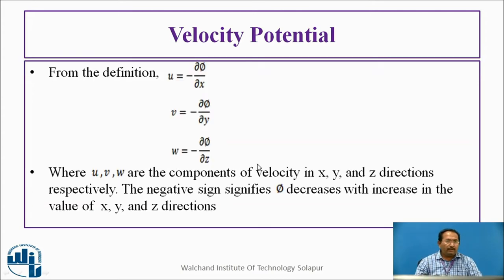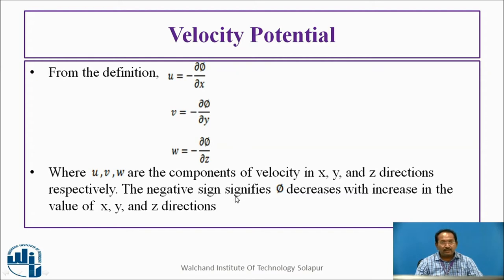From the definition, u equals negative partial derivative of phi with respect to x, v equals negative partial derivative of phi with respect to y, and w equals negative partial derivative of phi with respect to z, where u, v, w are the velocity components in x, y, z directions. The negative sign signifies that the velocity component decreases with increase in the values of x, y, z direction.